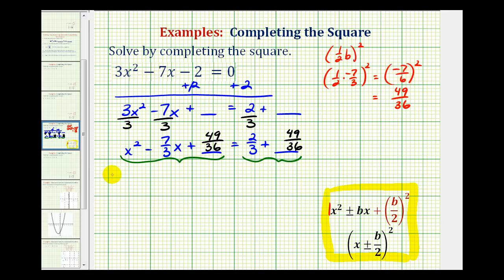This will factor into two binomial factors. The first terms will be x and x, the factors of x². The factors of 49/36 that add to -7/3 are going to be -7/6 and -7/6. So I'll have -7/6 here and -7/6 here.